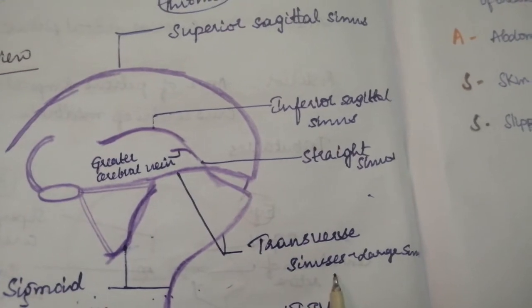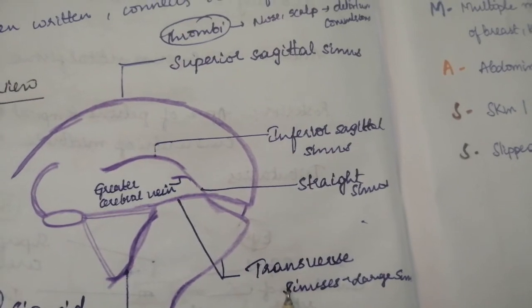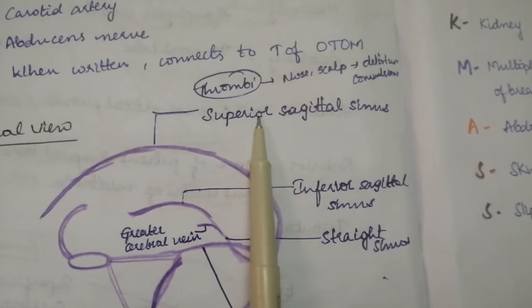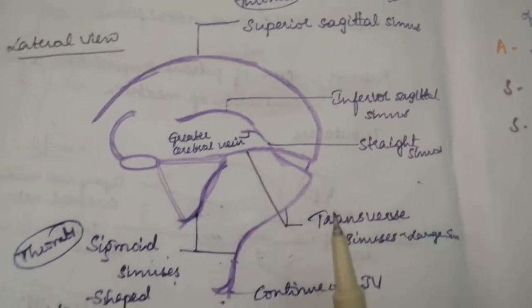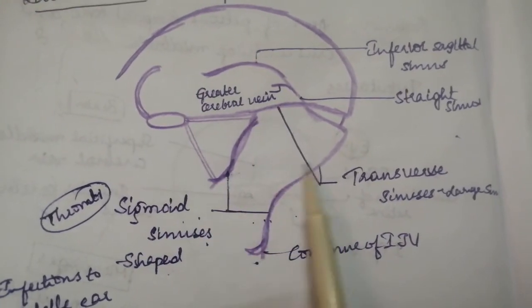Transverse sinus is a large sinus and it has left to the straight sinus. When coming to the right, it has your superior sagittal sinus.